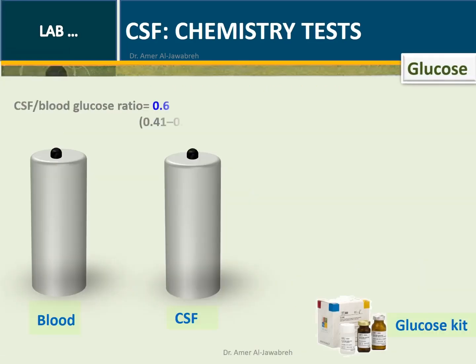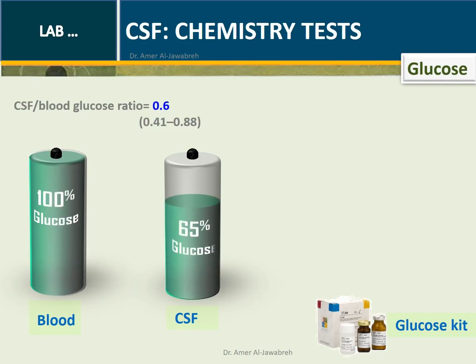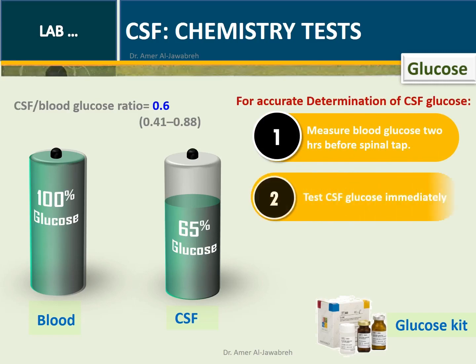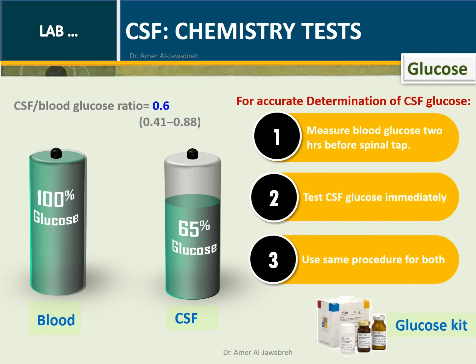Glucose Determination: The CSF-to-blood glucose ratio equals 0.6, ranging between 0.4 and 0.88. For accurate determination of CSF glucose, first measure blood glucose two hours before the spinal tap, then test CSF glucose immediately. Use the same procedure for both measurements.